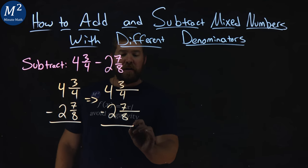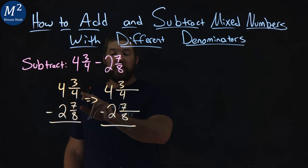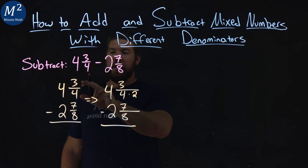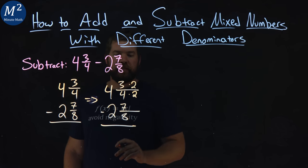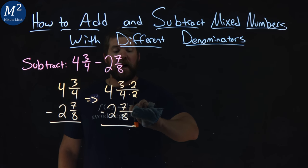From here, to have a common denominator, 8 and 4, well, if I multiply that 4 by 2, I get 8 in the denominator. So let's multiply that 4 times 2 and 3 times 2 as well. The 7 eighths doesn't actually have to change because we already have that common denominator.